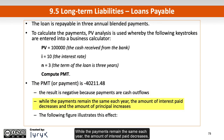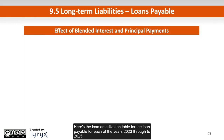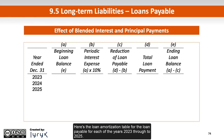While the payments remain the same each year, the amount of interest paid decreases and the amount of principal increases. Here is the loan amortization table for the loan payable for each of the years 2023 through to 2025.